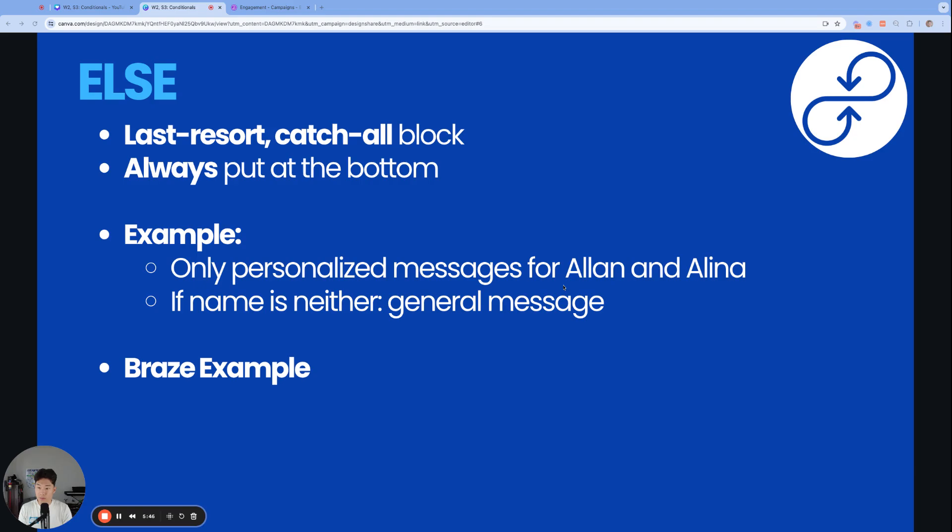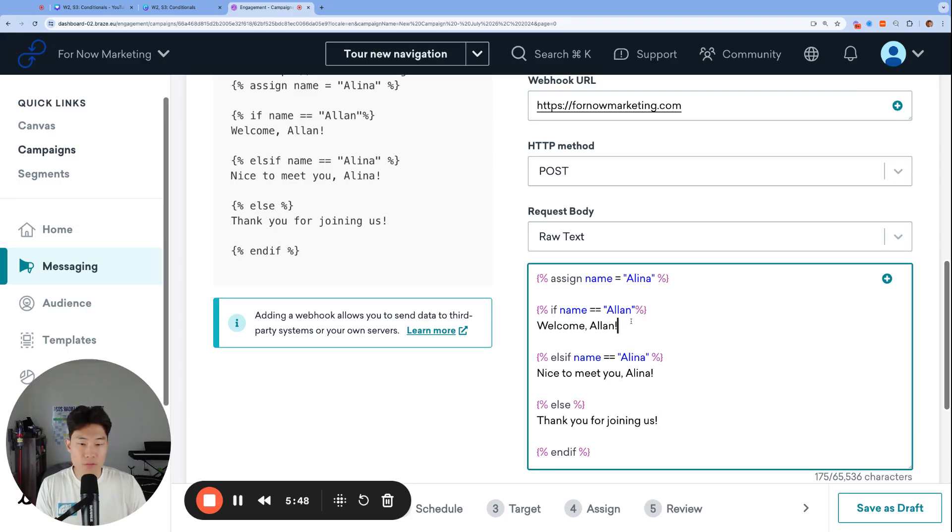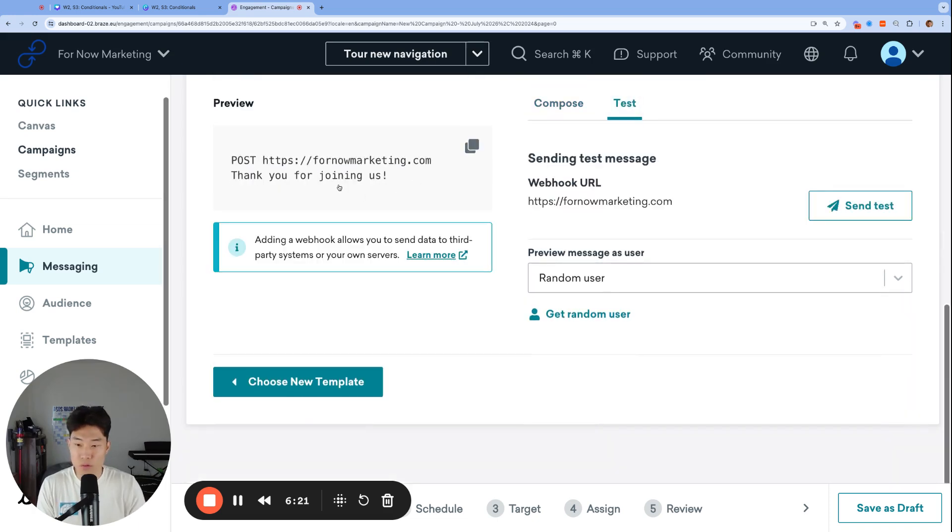Let's take a look at that in Braze. So we have our two messages for Alan and one for Alina. But let's say the user's name is Benny. And now this user does not qualify for the first if statement where name equals Alan. So then we check the next one. And then we also say else if name is equal to Alina is also not correct. It is also false. So then because we run out of both if and else if statements to check, now we move on to the else block, the last resort catch-all block, which should just say thank you for joining us without a specific mention of the name. Let's take a look. Thank you for joining us.